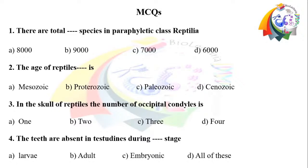Question number 3: In the skull of reptiles, the number of occipital condyles is. Option A: 1. Option B: 2. Option C: 3. Option D: 4.